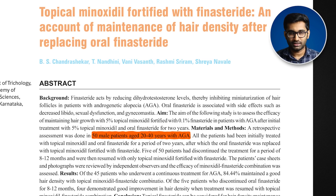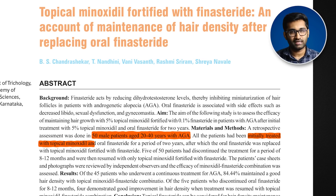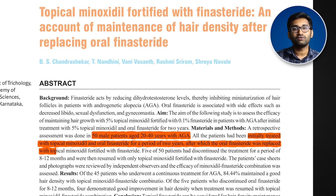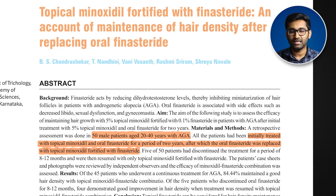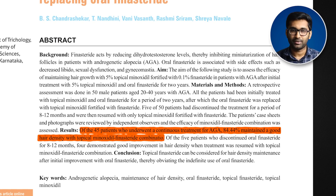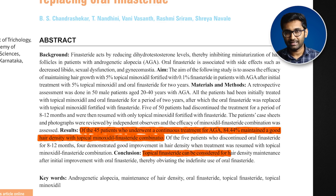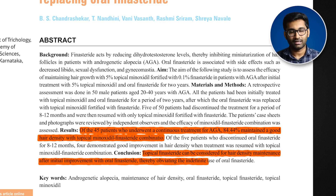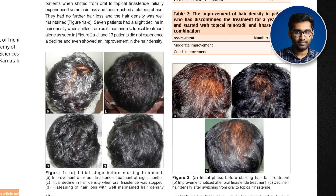There is also a group of androgenetic alopecia patients who were on oral finasteride and switched to topical finasteride, followed up for 2 years. Most of these patients were able to maintain their hairline. In the topical finasteride group, hair density was slightly lower than on oral, but most patients maintained a good baseline. Photos documenting this are available via the link in the description.